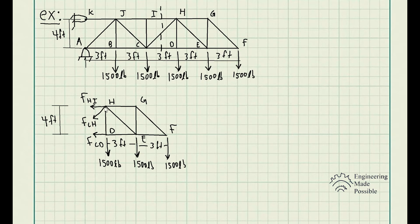Drawing the right side section, I assume all cut members — HI, CJ, and CD — are in tension, so I draw their internal forces pointing away from the cut. From here, I can analyze this section using the static equilibrium equations.